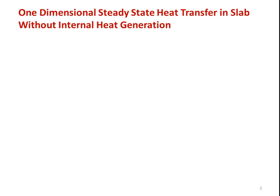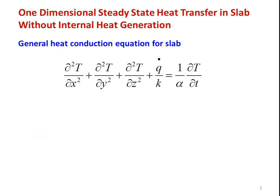The situation here is one-dimensional steady state heat transfer in a slab without internal heat generation. Let us write the general heat conduction equation for a slab. The equation is: ∂²T/∂x² + ∂²T/∂y² + ∂²T/∂z² + q̇/k = (1/α)(∂T/∂t). This equation is applicable for three-dimensional unsteady state heat transfer in a slab with heat generation.